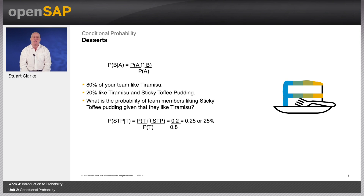Let's rearrange the formula using simple algebra to find another use for conditional probability. We started with calculating the probability of the events A and B, which we calculated by multiplying the simple probability of A by the probability of B given A. You may want to pause the video for a few seconds to remind yourself about that formula. However, what if we want to calculate the likelihood of B given A?